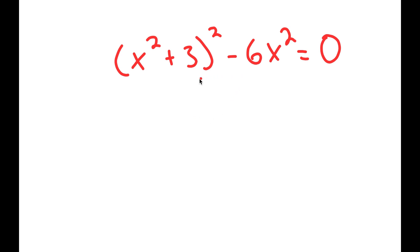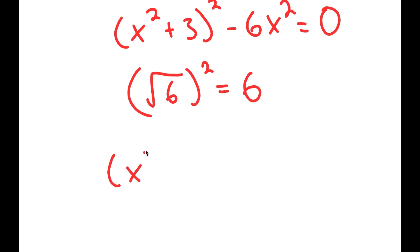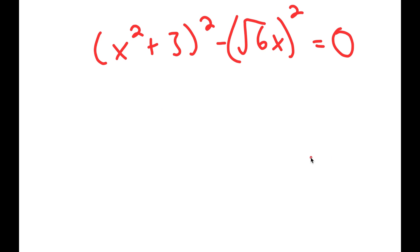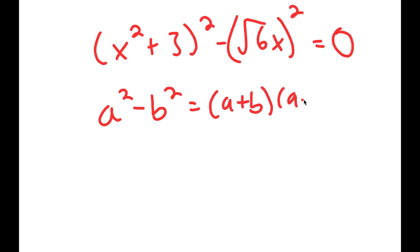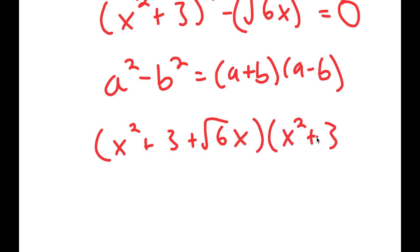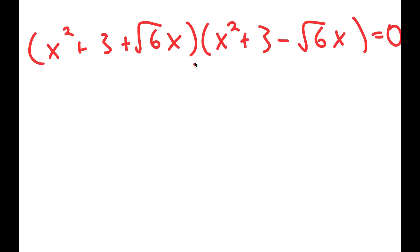And remember how the square root of 6 squared is equal to 6. So what I'm going to do is rewrite this as x squared plus 3 squared minus the square root of 6 times x, squared, is equal to 0. The reason I did that is because now I can use the property a squared minus b squared equals a plus b times a minus b. So in this case, this turns into x squared plus 3 plus the square root of 6 times x, times x squared plus 3 minus the square root of 6 times x, is equal to 0.